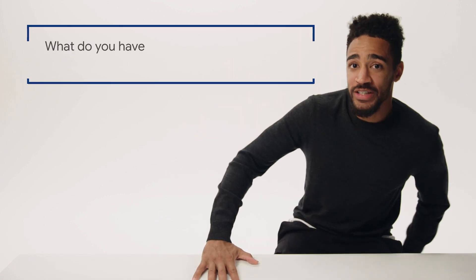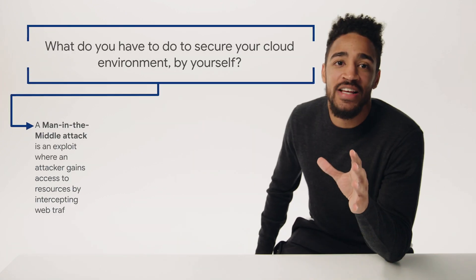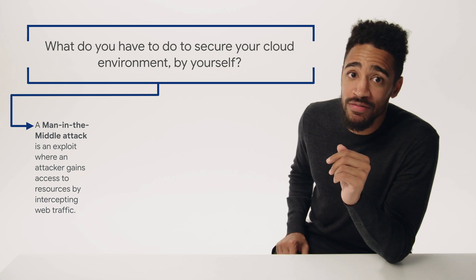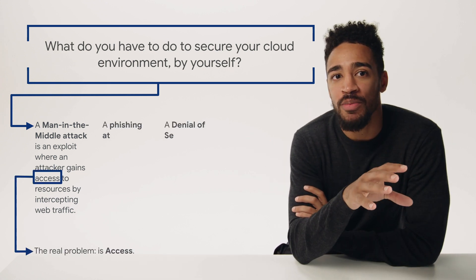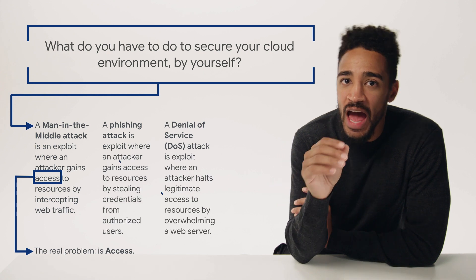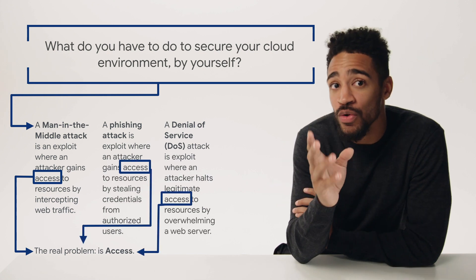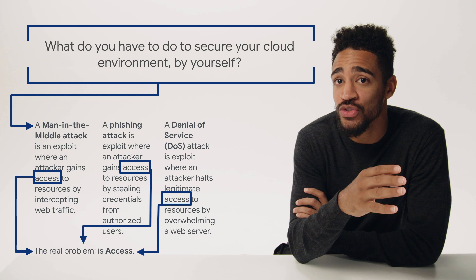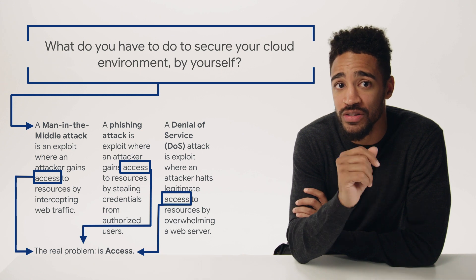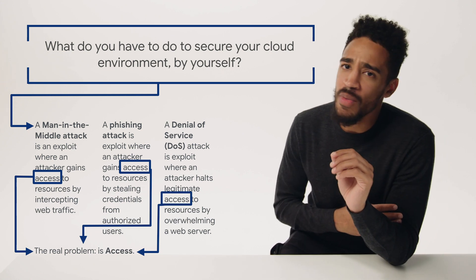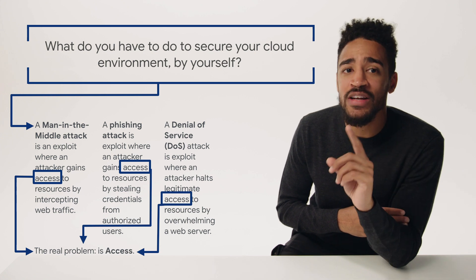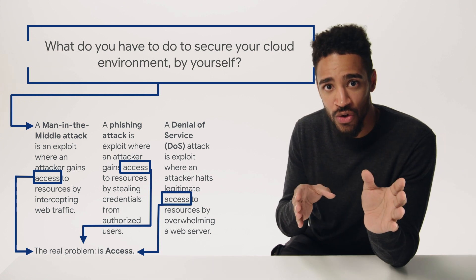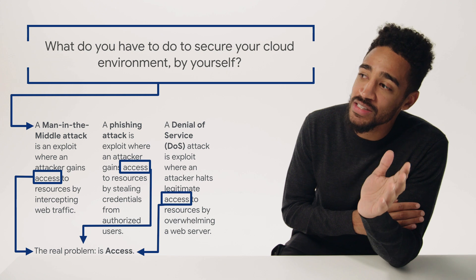OK, here's what we know. A man-in-the-middle attack involves an attacker getting access to credentials they shouldn't have. We could solve this, but there's actually a broader problem here: access. Access represents ensuring that only the right identities have access to the right resources for your system. For example, you might not want developers to be able to delete resources on your system, so you have to enact a policy or access control to prevent that from happening by accident or ill will.